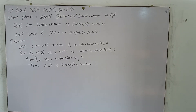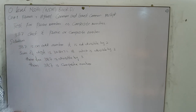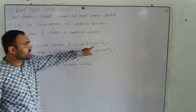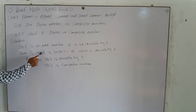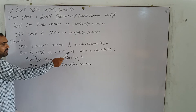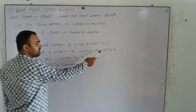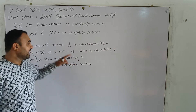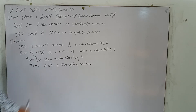Now, test for prime number or composite number. Check 387 — is it prime or composite? Solution: 387 is an odd number because the ones place digit is odd, so it is not divisible by 2. Now we sum the digits: 3 + 8 + 7 = 18. Since 18 is divisible by 3, therefore 387 is divisible by 3. So we say that 387 is a composite number.